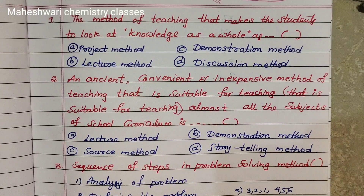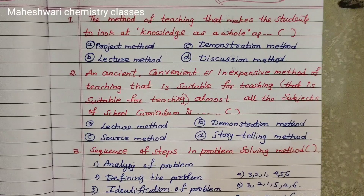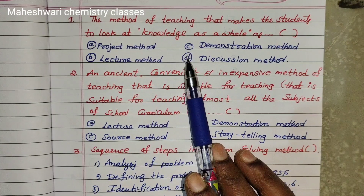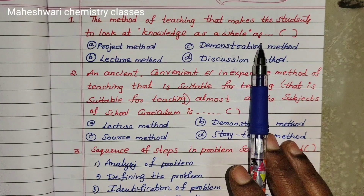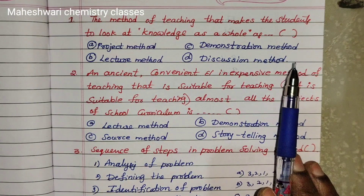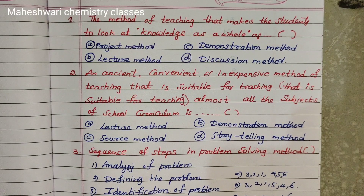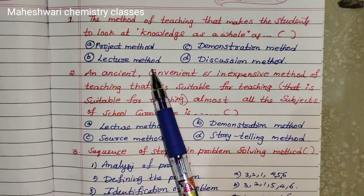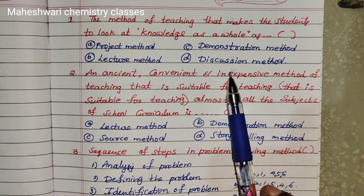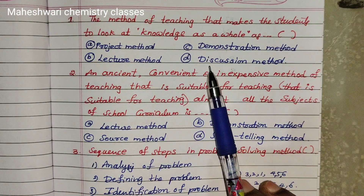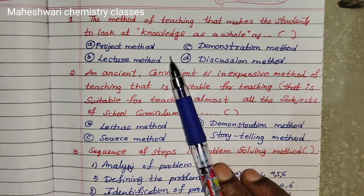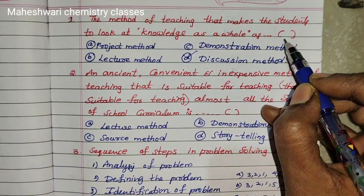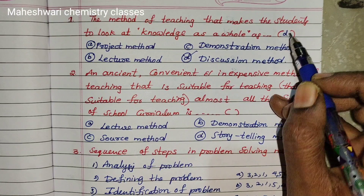First question: The method of teaching that makes students look at knowledge as complete knowledge. The options are Research, Project, Demonstration, and Lecture Discussion. The answer is option D: Discussion.